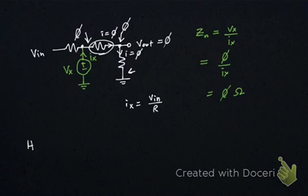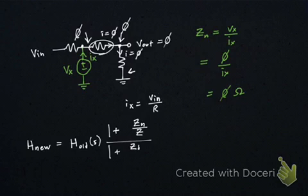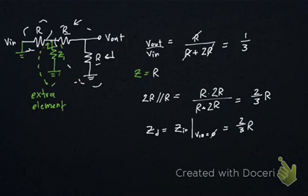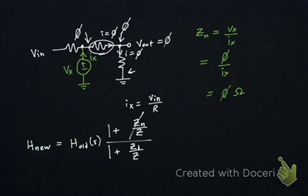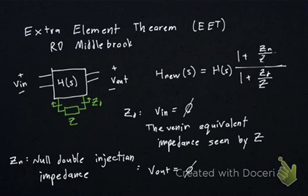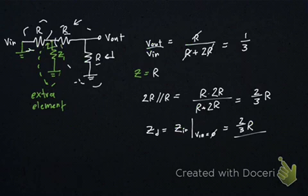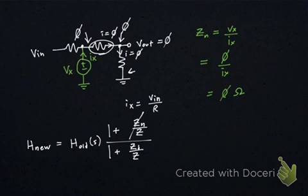So our overall transfer function H_new was H_old, in general it's a function of S, times 1 plus Zn over Z, divided by 1 plus Zd over Z. Now we just calculated Zn, it's 0, right? So we're just left with this 1 and this Zd term on the top. We calculated Zd previously, it's just 2 thirds R. And what was our H_old value? Our H_old was, it looks like, we calculated it, it was 1 third.